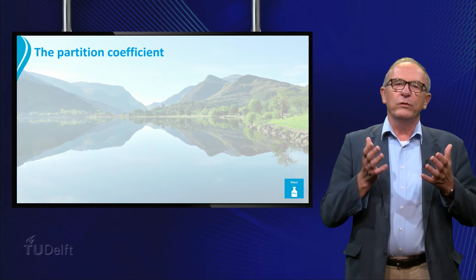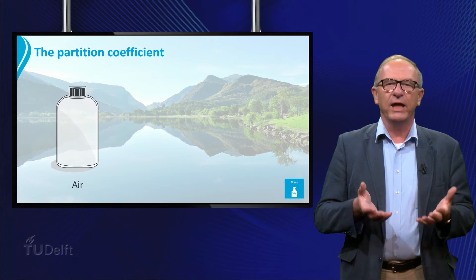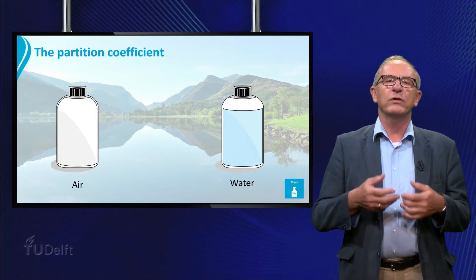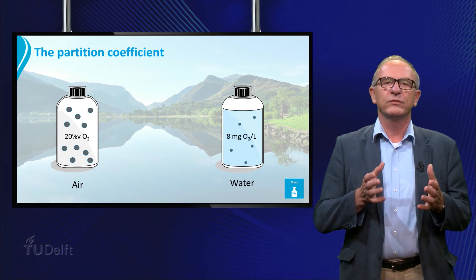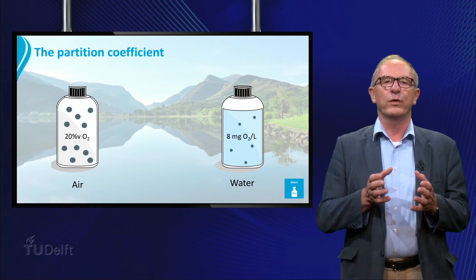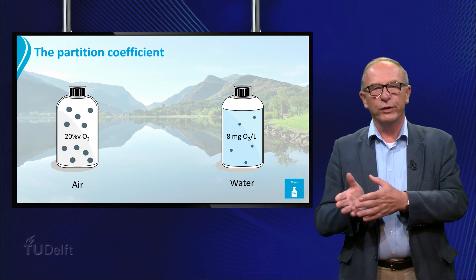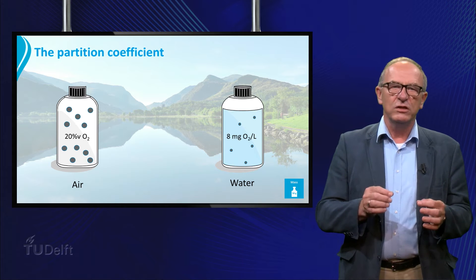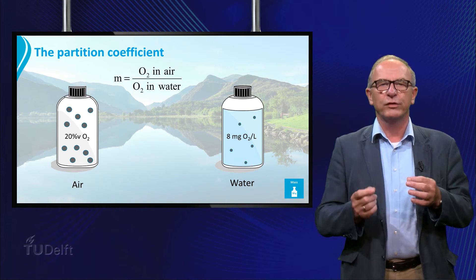Although we don't always think about how much oxygen is present in the air and in the water, we know that roughly 20% of the air is oxygen, and that about 8 mg of oxygen dissolves in 1 liter of water. The ratio of the concentration in air and the one in water is called the partition or distribution coefficient m between air and water.